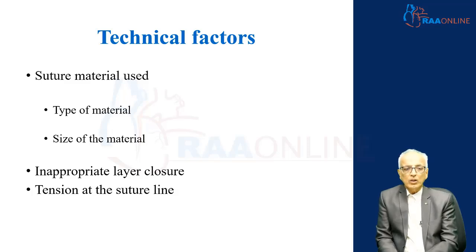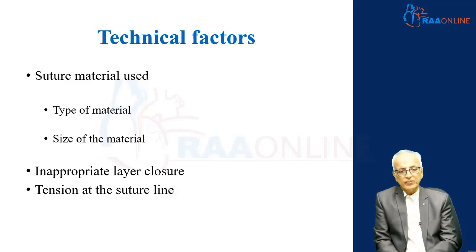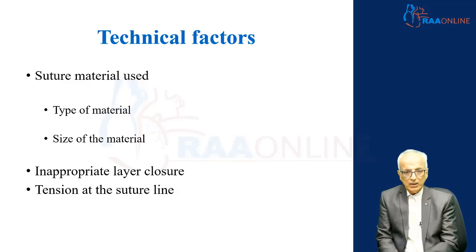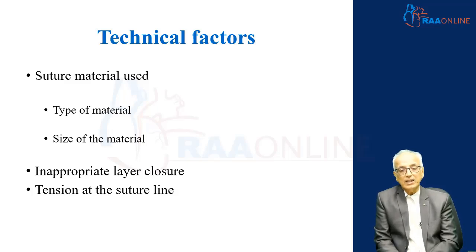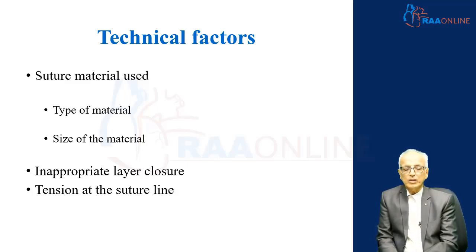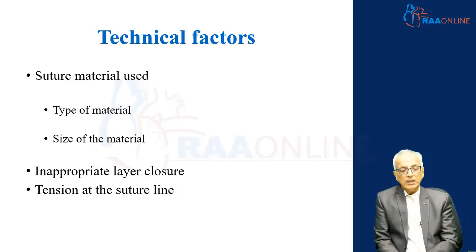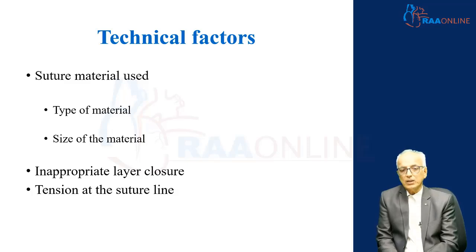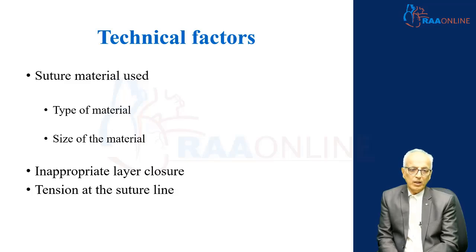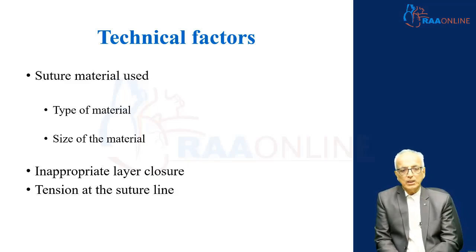Technical factors include the suture material used, depending on the type and size of the material. If you use a very thin material for an anterior rectus sheath, and the tensile strength of the suture material is less than that of the tissue, the suture material will give way. If the tensile strength of the suture material is more than the tensile strength of the tissue, the tissue will cut through. For example, using stainless steel wire will cause the anterior rectus sheath to cut through, and using a 3-0 or 4-0 suture material in the anterior rectus sheath means the suture will snap.